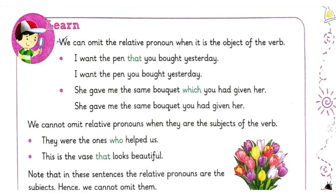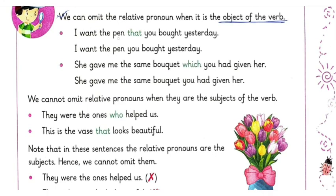We can omit the relative pronoun when it is the object of the verb. For example: 'I want the pen that you brought yesterday' — 'pen' is the object of the verb 'want', and 'that' refers to 'pen'. So we can write 'I want the pen you brought yesterday' — the relative pronoun is omitted. Second: 'she gave me the same bucket which you had given her' — 'bucket' is the object of the verb, so we can write 'she gave me the same bucket you had given her'.